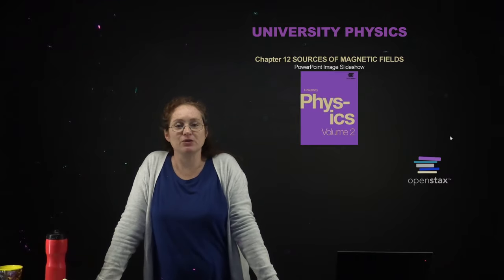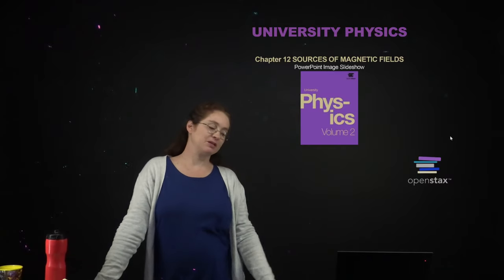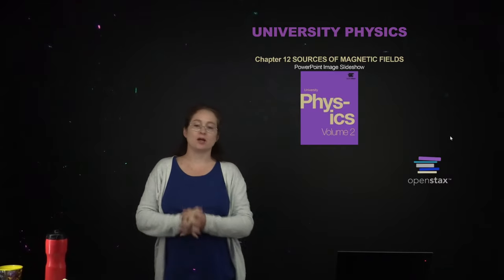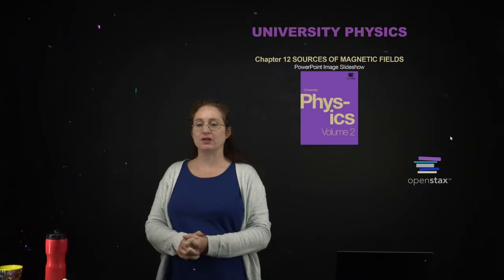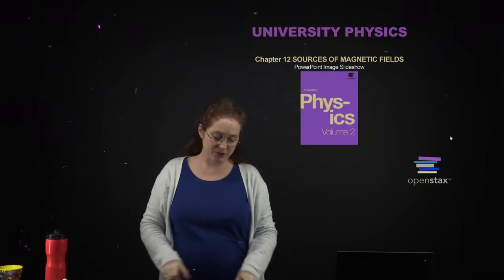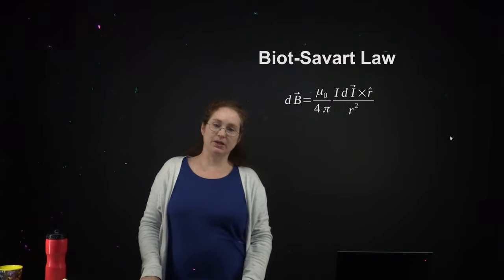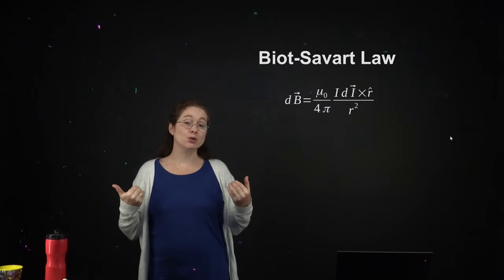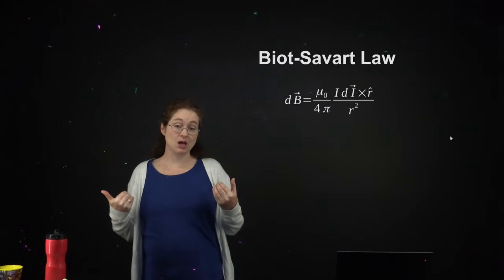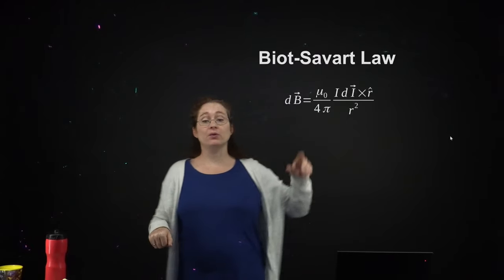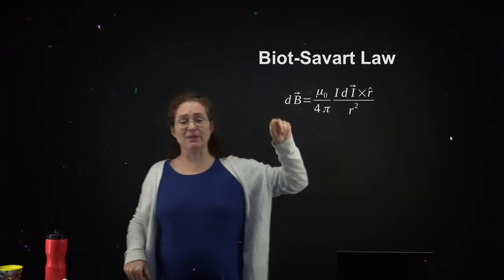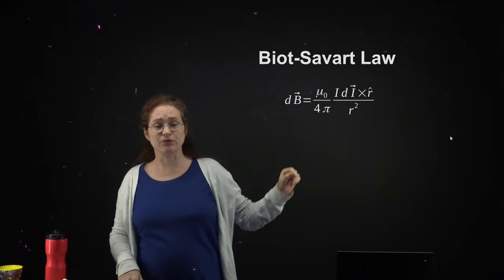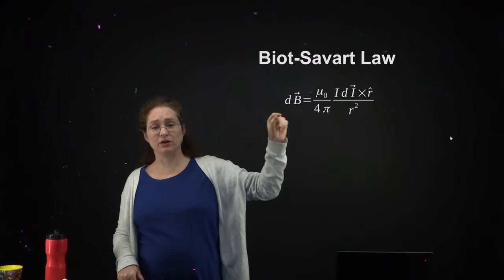We're going to talk about sources of magnetic fields, and in particular, we're going to be talking about the magnetic field from wires and calculating what that looks like. We call this the Biot-Savart law, and what it tells us is the magnetic field from a current.